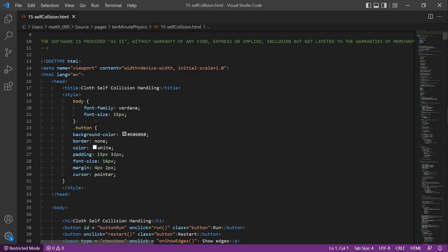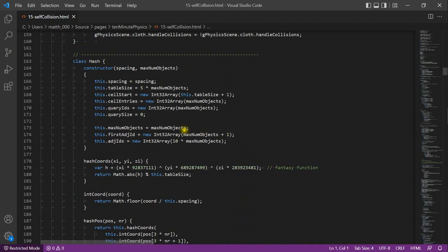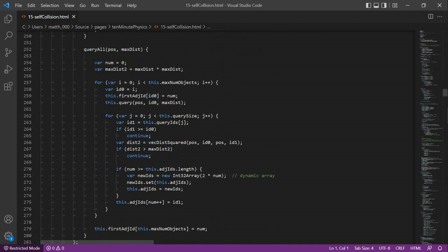The code is based on the code of the last tutorial about cloth simulation. Therefore, I will only show you what I added. This is the hash that I introduced in tutorial number 11. I added one new method. It's the method queryAll. This method computes the neighbor list of all the particles.